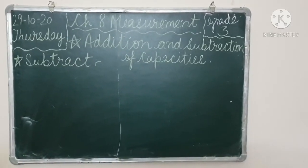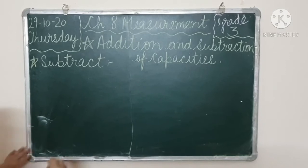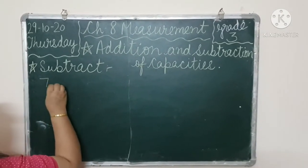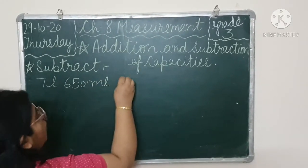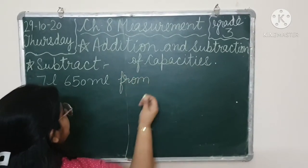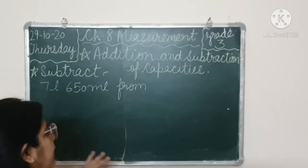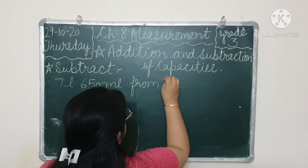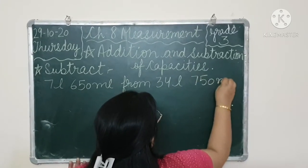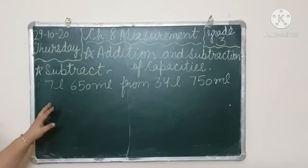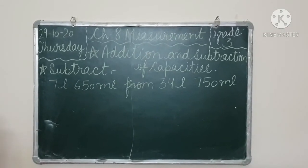Now subtraction. Now we will do subtraction. How do we do subtraction? Suppose we have 7 liter, 650 milliliter from 34 liter, 750 milliliter. Now we have subtraction: 7 liter, 650 milliliter from 34 liter, 750 milliliter.